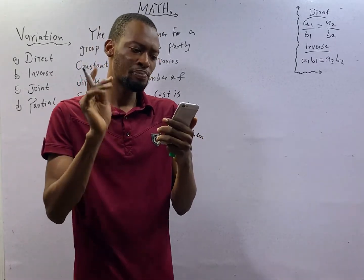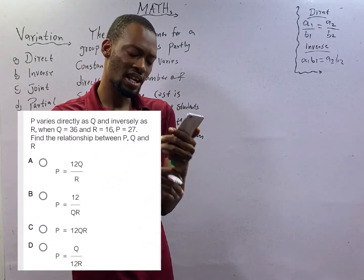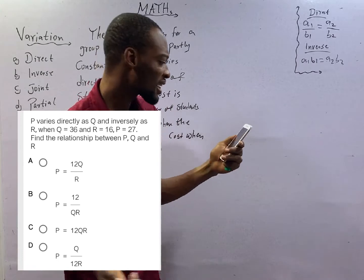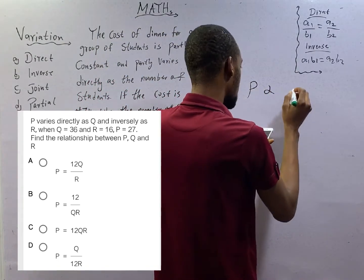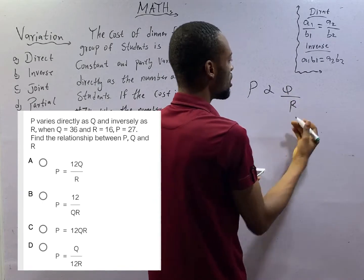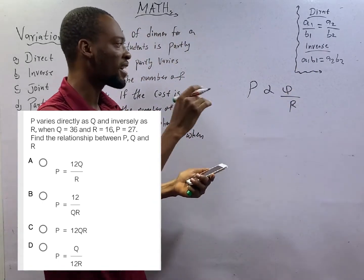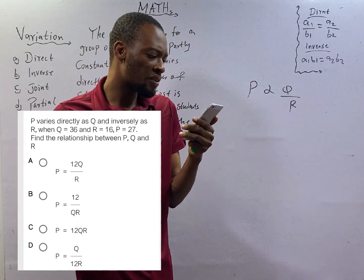This question says: P varies directly as Q and inversely as R. Mathematically, it means that P varies directly as Q and inversely as R. Inverse will be at the bottom, direct will be at the top. So what are they trying to see?